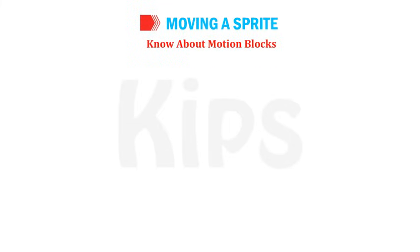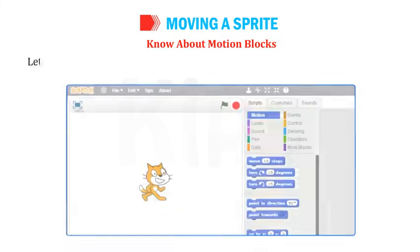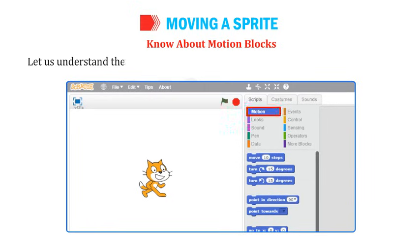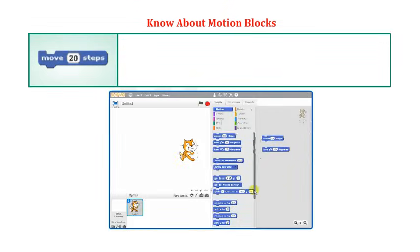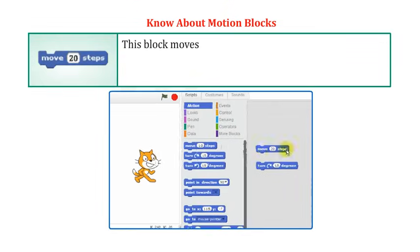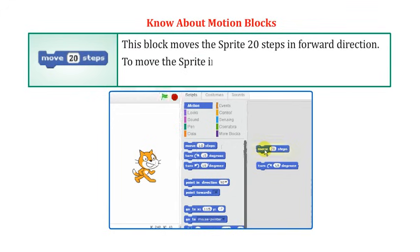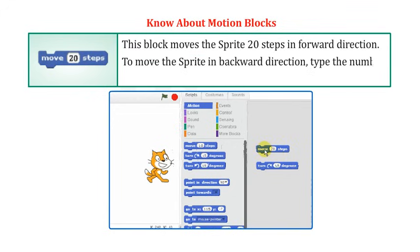Let's understand the use of Motion Blocks used in the project. Move 20 Steps moves the sprite 20 steps in the forward direction. To move the sprite in the backward direction, type the number with a preceding minus sign, for example, minus 20.